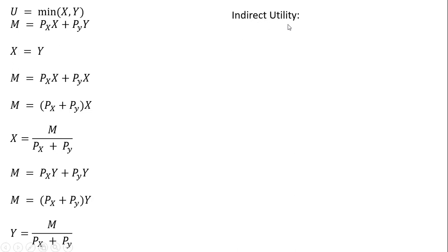Now we're going to get the indirect utility function. I'm going to call that V. V is going to be the minimum of X and Y, where X, we're going to substitute in the demand for good X, and for Y, I'm going to substitute in the demand for good Y. And so the minimum of what we have here in parentheses is just given by income divided by the price of good X plus the price of good Y.